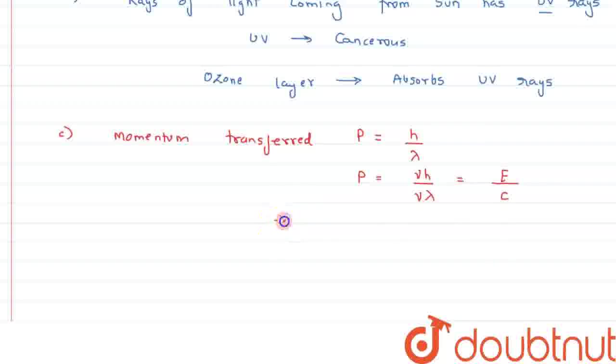So, from here, we can say, therefore, since C, that is speed of light or velocity of light, is very high, of the order 3 x 10 raised to 8 meter per second, we can say the value of momentum transferred, the value of P, will be small.